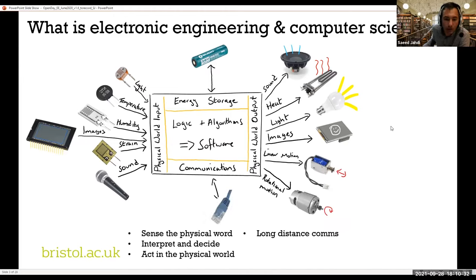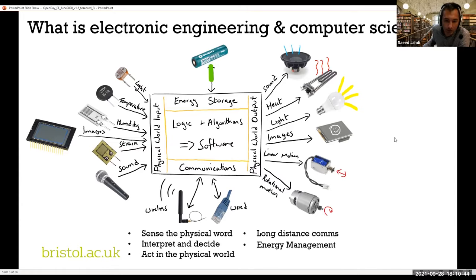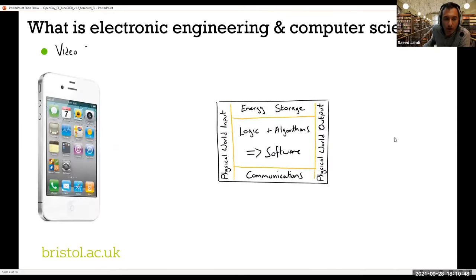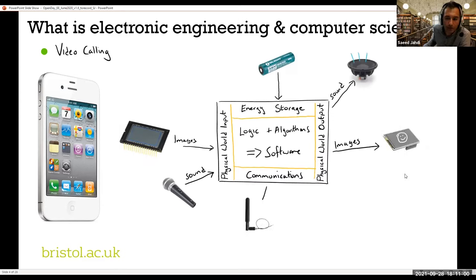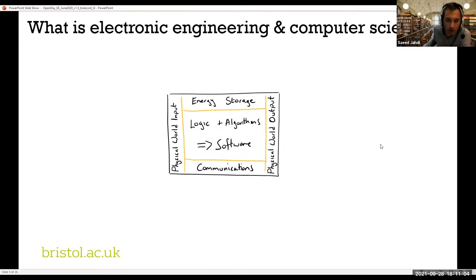You will also need to have communications with the external world through wireless or wired connections, which is part of the interface between electronics and computer science. If you look at a typical phone, all of these elements I just explained will be inside there — sound, images, both as inputs and outputs, and also connection to the internet.